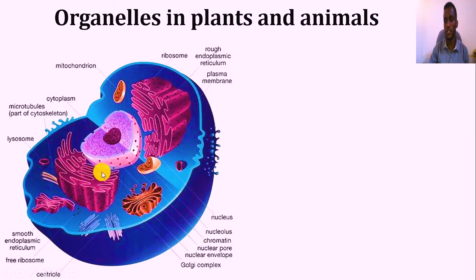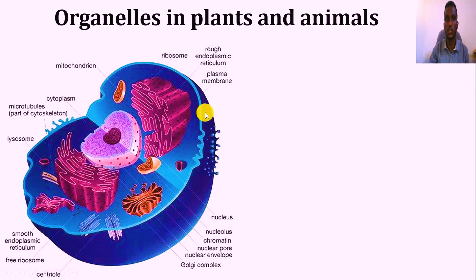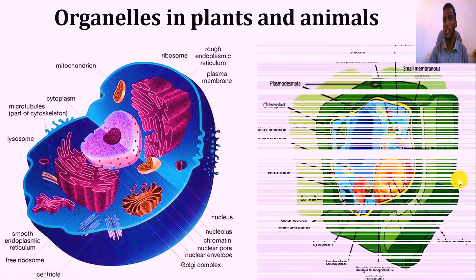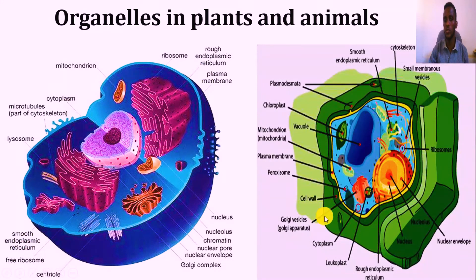The animal cell is representative. We represent another element: that is the outer membrane, the cell membrane, the endoplasmic reticulum, the ribosome, and the mitochondria. In the case of the plant cell, we will talk about the cytoplasm, the plasma membrane, the endoplasmic reticulum, as well as the mitochondria.